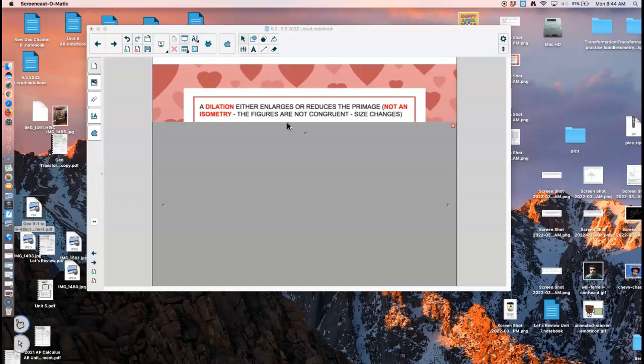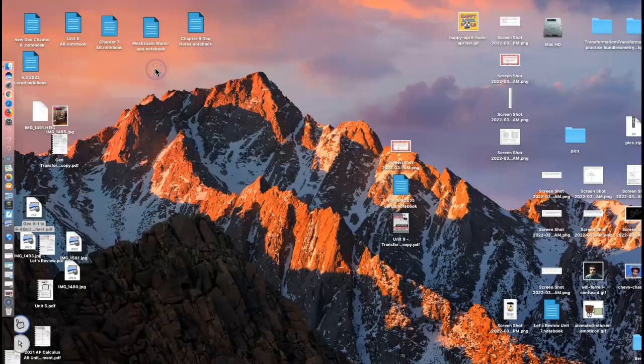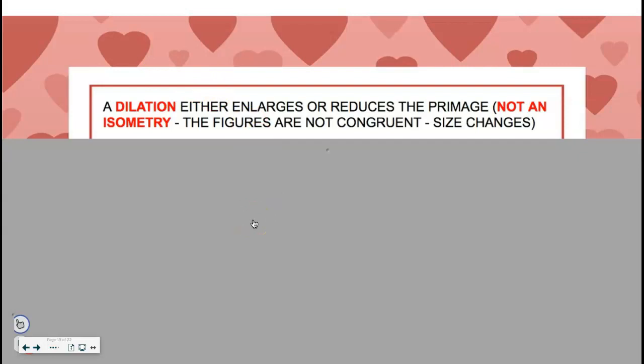What a dilation does is it either enlarges something, blows it up, makes it bigger, or it reduces something, shrinks it, or makes it smaller. The dilation is the one of the four that's not an isometry because the figures change in size.